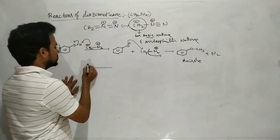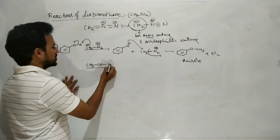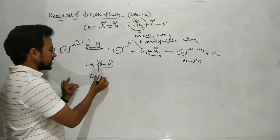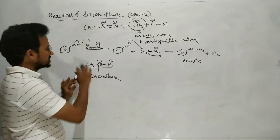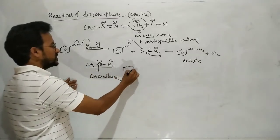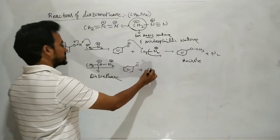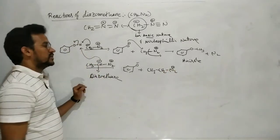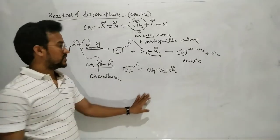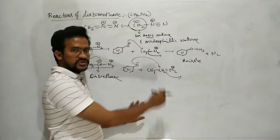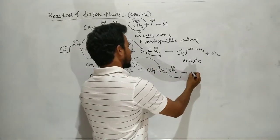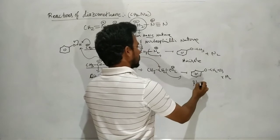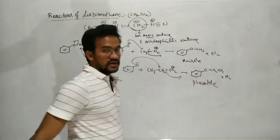Similarly, with a higher diazo compound such as CH3CH2N2⁻, the same acid-base reaction takes place first. Phenol is converted to phenoxide ion, and the diazo carbon accepts the proton to give CH3CH2N2⁺. The nucleophilic phenoxide then attacks the electrophilic carbon after N2 leaves, giving ethoxybenzene (also called phenetole) plus N2.